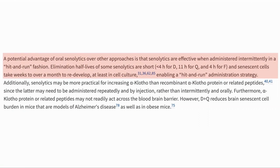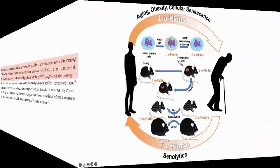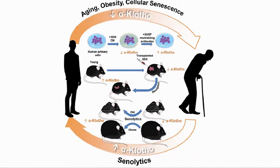As a way of increasing klotho expression, oral senolytics have the advantage that they can be administered intermittently, as after elimination of senescent cells they take weeks to over a month to redevelop. In summary, the study shows that increased senescent cell burden decreases klotho, and reducing this burden through senolytics led to increased klotho expression. Klotho declines with age and its expression has been associated with increased cognitive ability, so it's great to see that senolytics like quercetin and fisetin, which work when taken orally, can increase this expression.